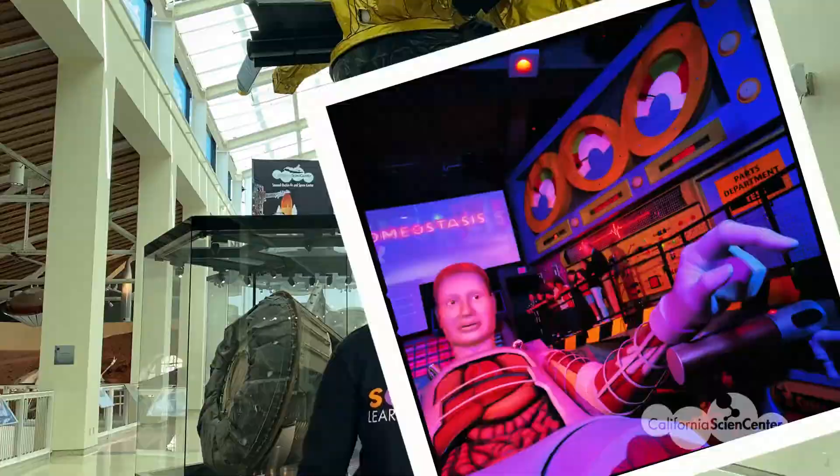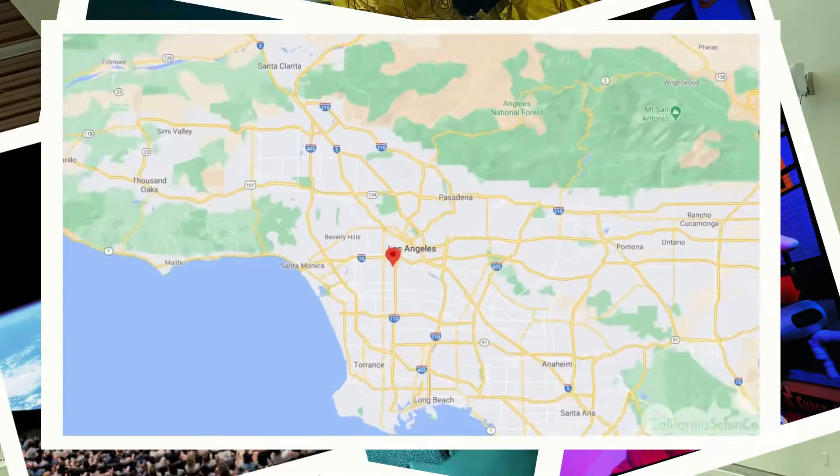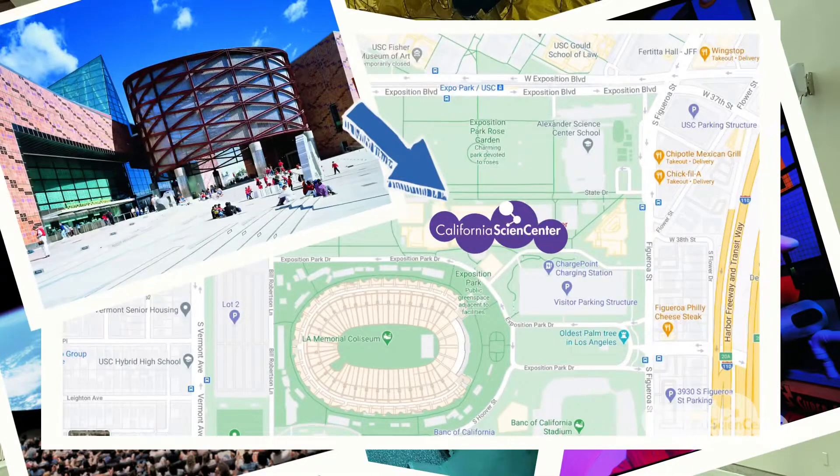Hi, my name is Elaine and I'm an educator here at the California Science Center. We are a free nonprofit museum in Los Angeles, California in Exposition Park. I am here in our air and space gallery to explore something we experience every day: light.